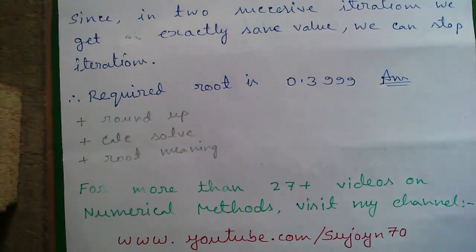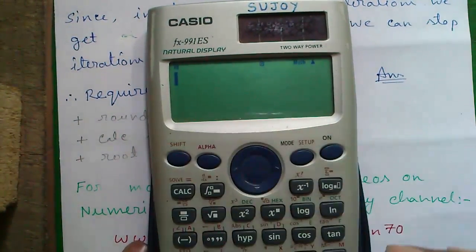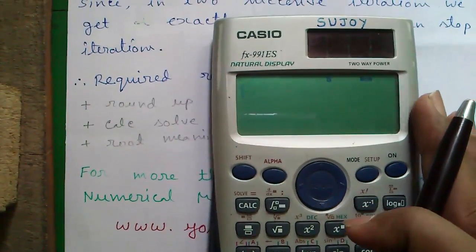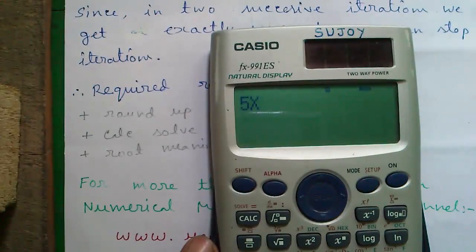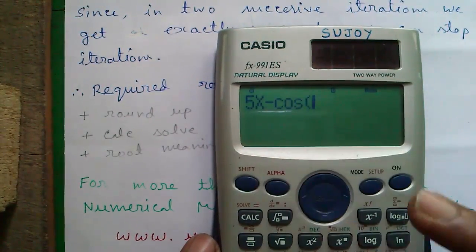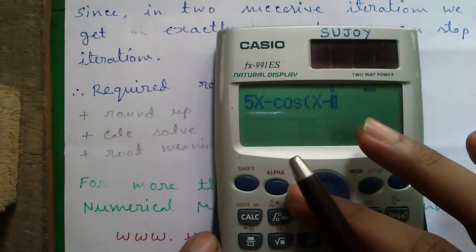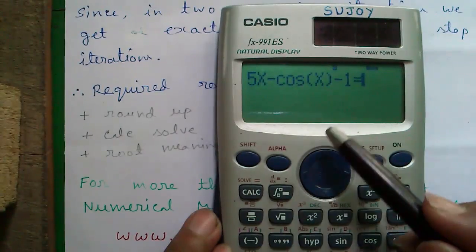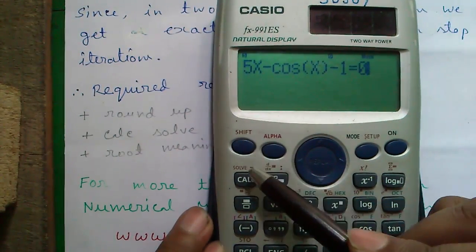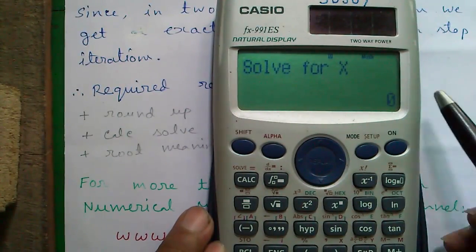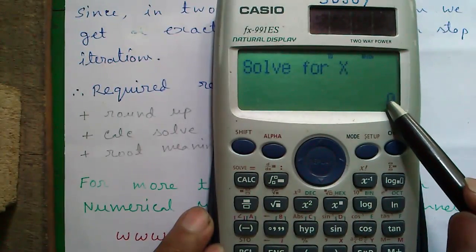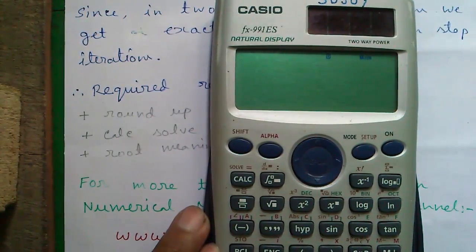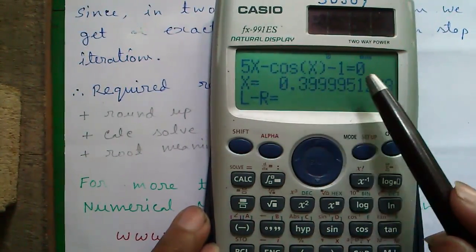And now I will tell you how to find out the root directly using the calculator. For that first clear the memory using shift and 9 and enter 3 to clear all. Next enter the expression 5x minus cos x minus 1, don't forget to give a right parenthesis after cos. Enter alpha and calc to get the equals to sign and enter 0 and now press shift and calc. For x value enter either the lower value of the range or the upper value of the range. So our lower value was 0.25 we will enter that and press equals to. So it will calculate the x for you that is 0.3999.